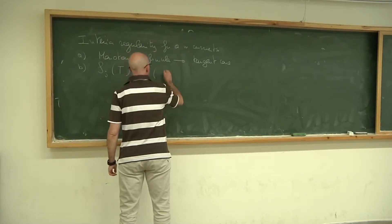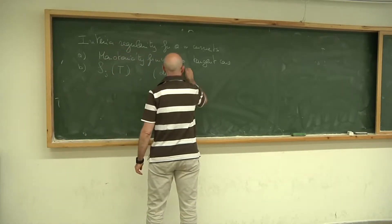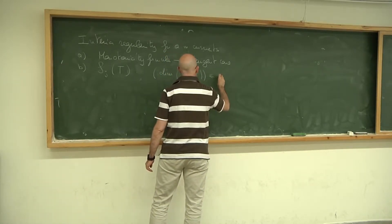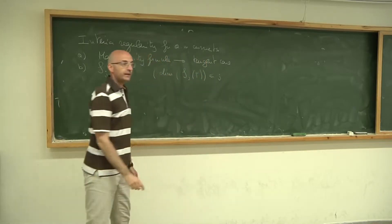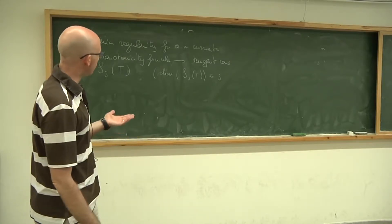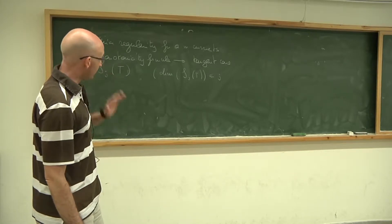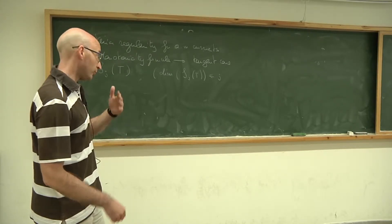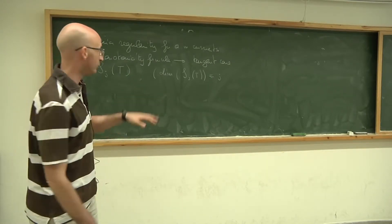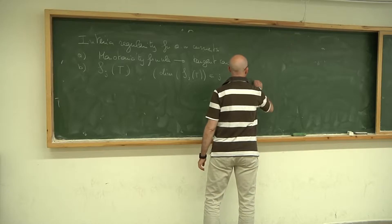The general theorem, called Allard's stratification theorem, is that the Hausdorff dimension of each of these strata is at most j. The (m-1)-dimensional stratum is actually empty, because the (m-1)-dimensional stratum should have tangent cones which are area-minimizing and which are two m-dimensional, or a family of m-dimensional planes crossing on an (m-1)-dimensional plane. It is easy to prove that this is not minimizing. So in particular, S_{m-1} of T is empty.